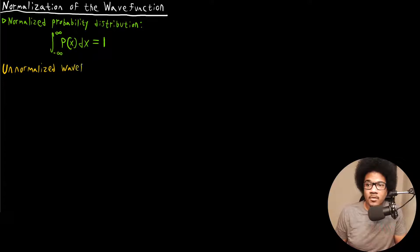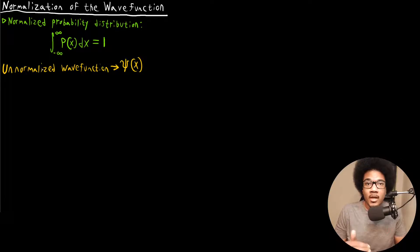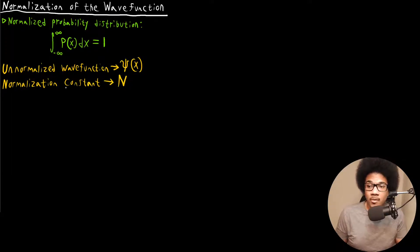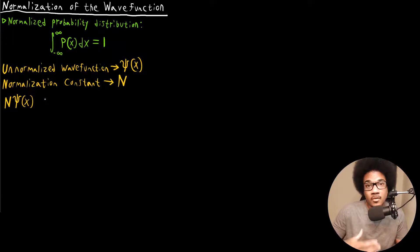Let's say we have an unnormalized wave function Psi of X. To begin this conversation, we'll start with one dimension. In order to normalize it, what we do is basically solve for a normalization constant — we introduce a normalization constant. We use a capital N to denote the normalization constant. What we can do is multiply the normalization constant by the wave function, so we'll have N times Psi of X. That normalization factor is built up in such a way that it makes this normalization integral true.